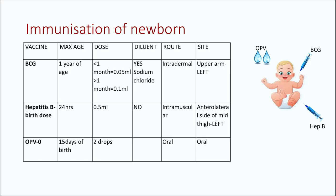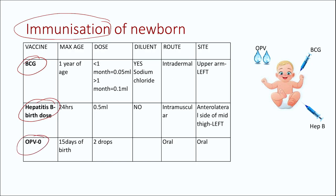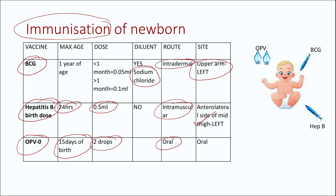Immunization of the newborn at birth: BCG (maximum age 1 year; dose 0.05 ml for less than 1 month; intradermal in the upper left arm), Hepatitis B birth dose (within 24 hours; 0.5 ml intramuscular in the anterolateral mid-thigh, left side), and OPV 0 dose (up to 15 days; 2 drops given orally).